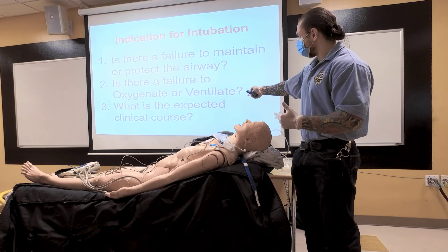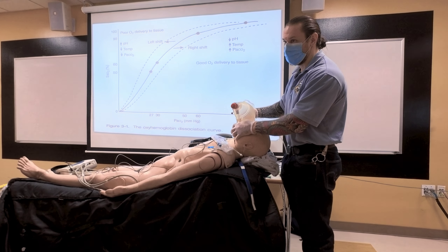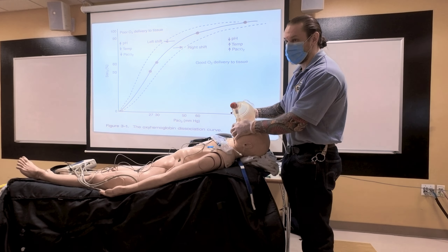The oxyhemoglobin dissociation curve — we talked about this in the A&P lecture. Why is this important? If you lower the CO2 too much — if I blow too fast, getting rid of CO2, I'm going to left-shift the curve. Oxygen is going to be held tighter by hemoglobin, so no oxygen is being delivered to a sick patient. So one breath every six seconds.